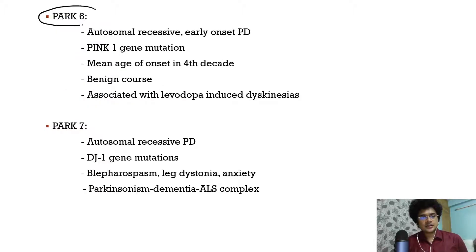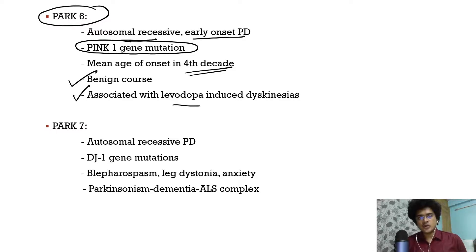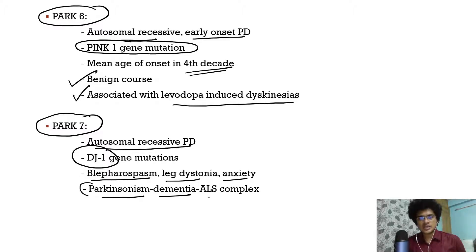PARK6 is autosomal recessive, early-onset Parkinson's disease caused by PINK1 gene mutation, usually presenting in the 4th decade. It has a benign course and is associated with levodopa-induced dyskinesias. PARK7 is autosomal recessive, caused by DJ1 gene mutations. Extra features include blepharospasm, leg dystonia, anxiety, and sometimes association with a Parkinson's-dementia-ALS complex.